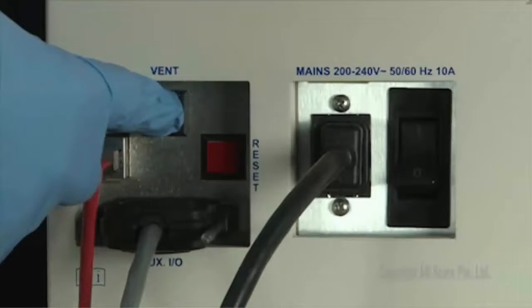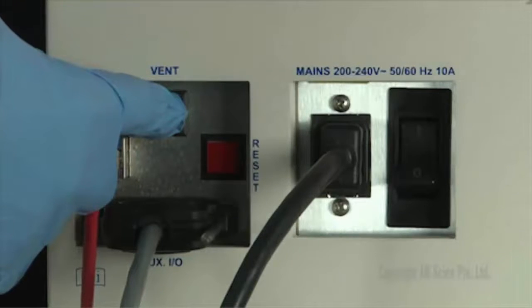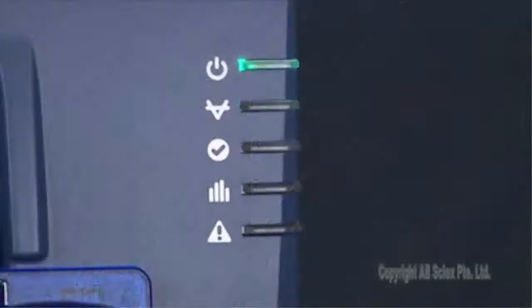Press and hold the vent button for three seconds. The instrument enters the vent mode and the turbo pump will spin down gradually. This is indicated by a steady power LED and a flashing vacuum LED.